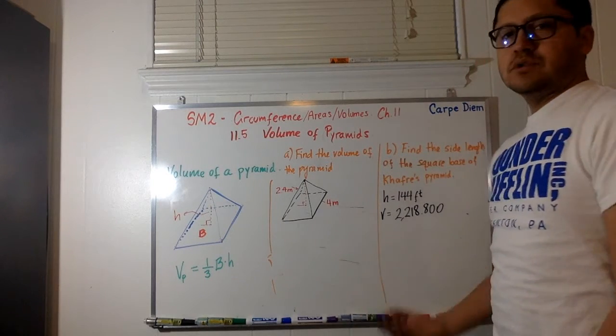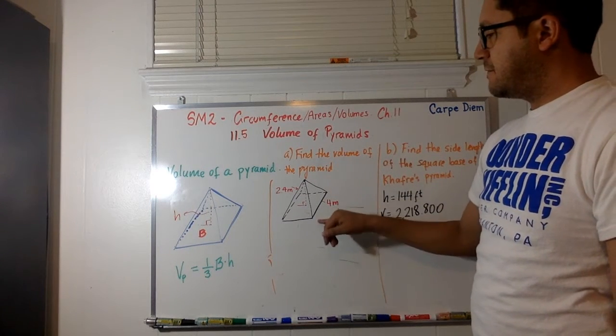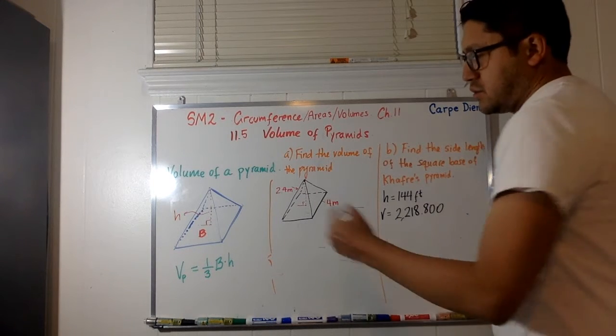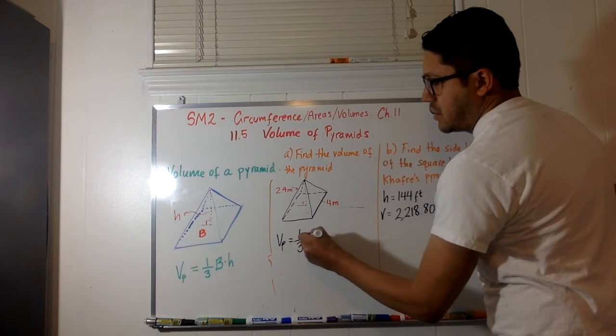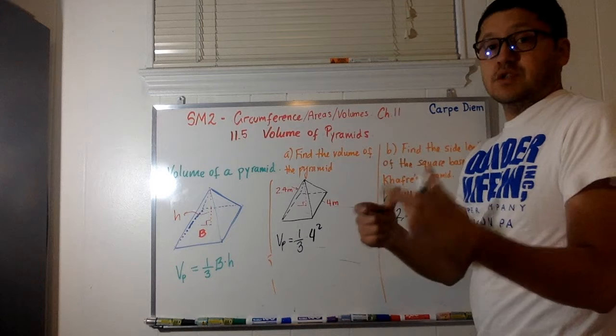And I'm going to do two exercises in this case. Finding the volume of a pyramid that has 4 as the side length and a height of 2.4. Okay, so we're just going to apply the formula. The volume of the pyramid is one-third of the area of the base, which is 4 squared, because it's a square.